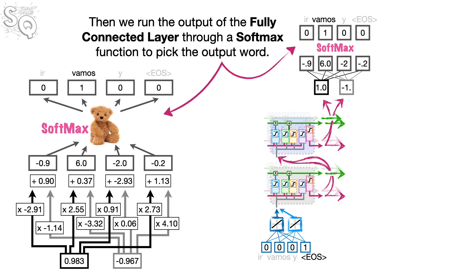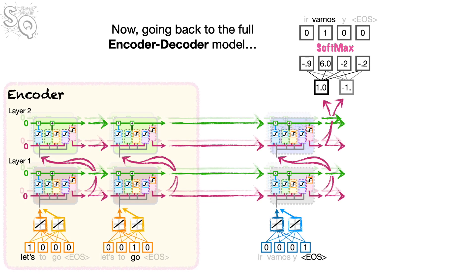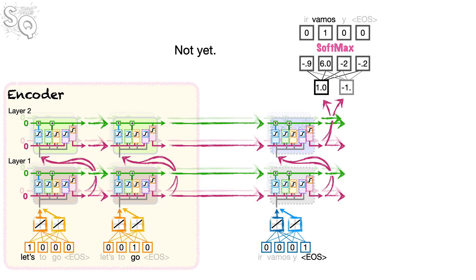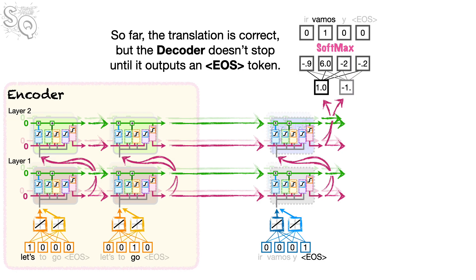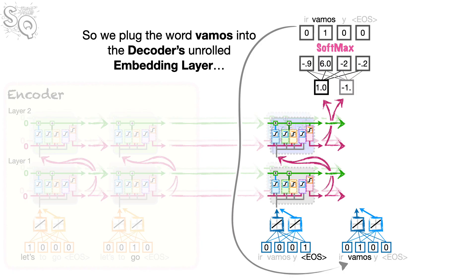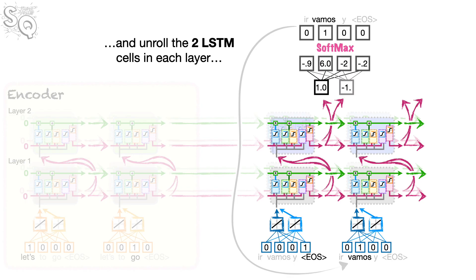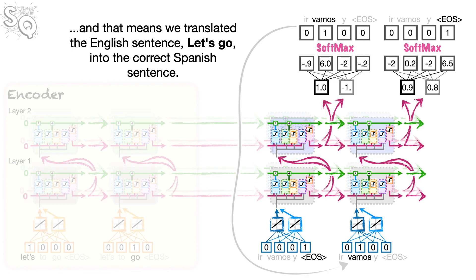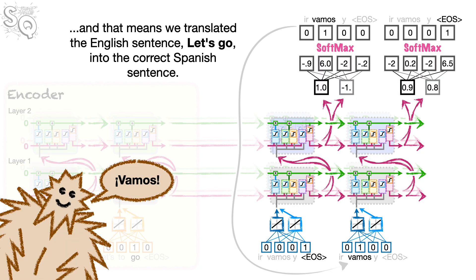Then we run the output of the fully connected layer through a softmax function to pick out the output word. Going back to the full encoder-decoder model, we see that the output from the softmax function is 'Vamos' — the Spanish translation for 'Let's Go.' However, the decoder doesn't stop until it outputs an EOS token. So we plug the word 'Vamos' into the decoder's unrolled embedding layer and unroll the two LSTM cells in each layer, then run the output values into the same fully connected layer. The next predicted token is EOS, and that means we translated the English sentence 'Let's Go' into the correct Spanish sentence: Vamos. Double bam!